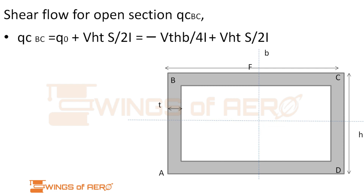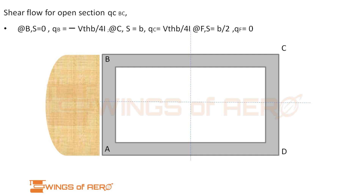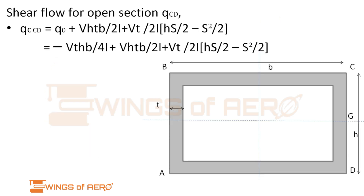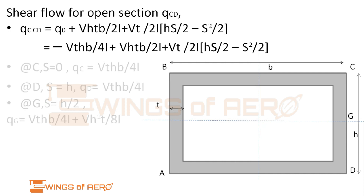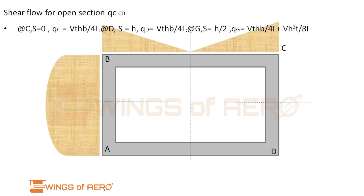Similarly, for q_closed(BC), after applying q0 and evaluating limits at B (s=0), C (s=B), and F (s=B/2), we get the values and can see that at point F the shear flow is 0. For q_closed(CD), applying q0 gives values at C, D (almost same magnitude), and G, with an additional term Vt H²/(8I), so we can draw the shear flow diagram accordingly.